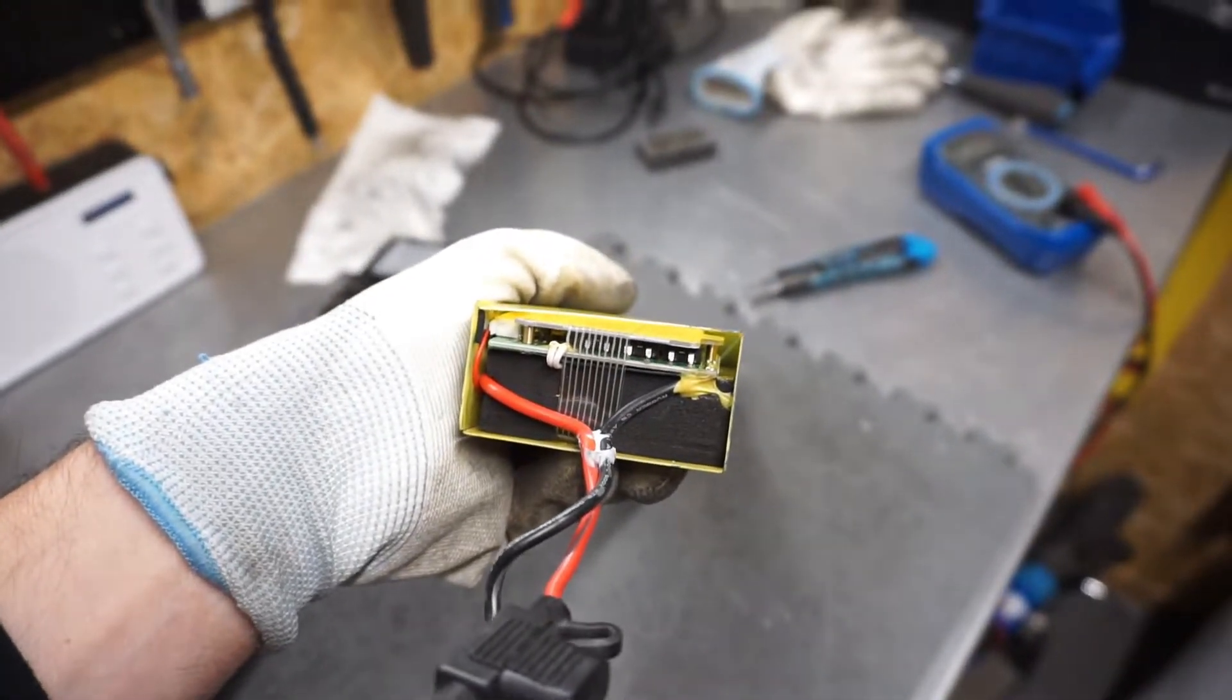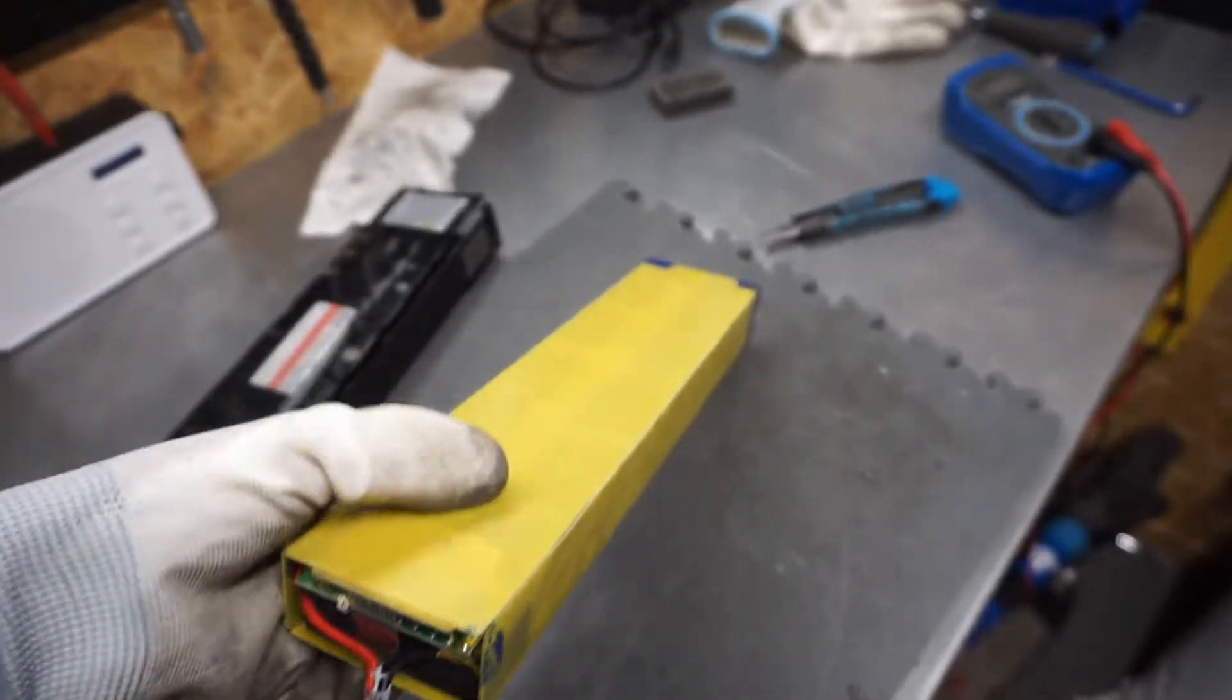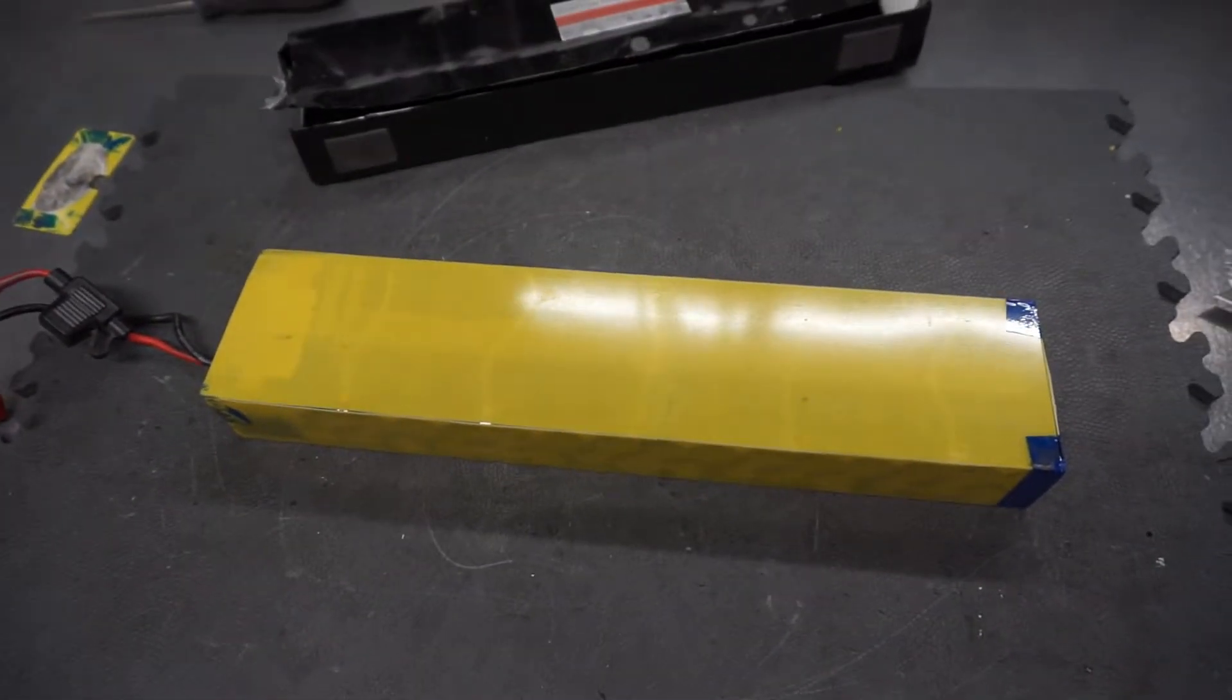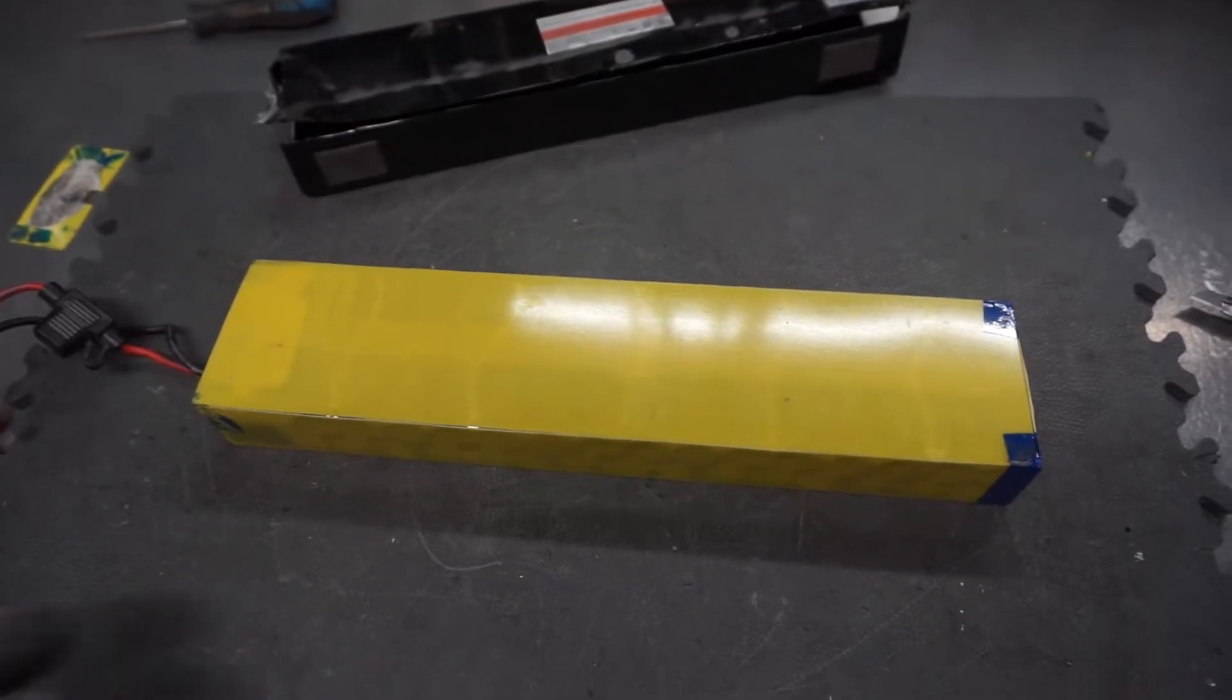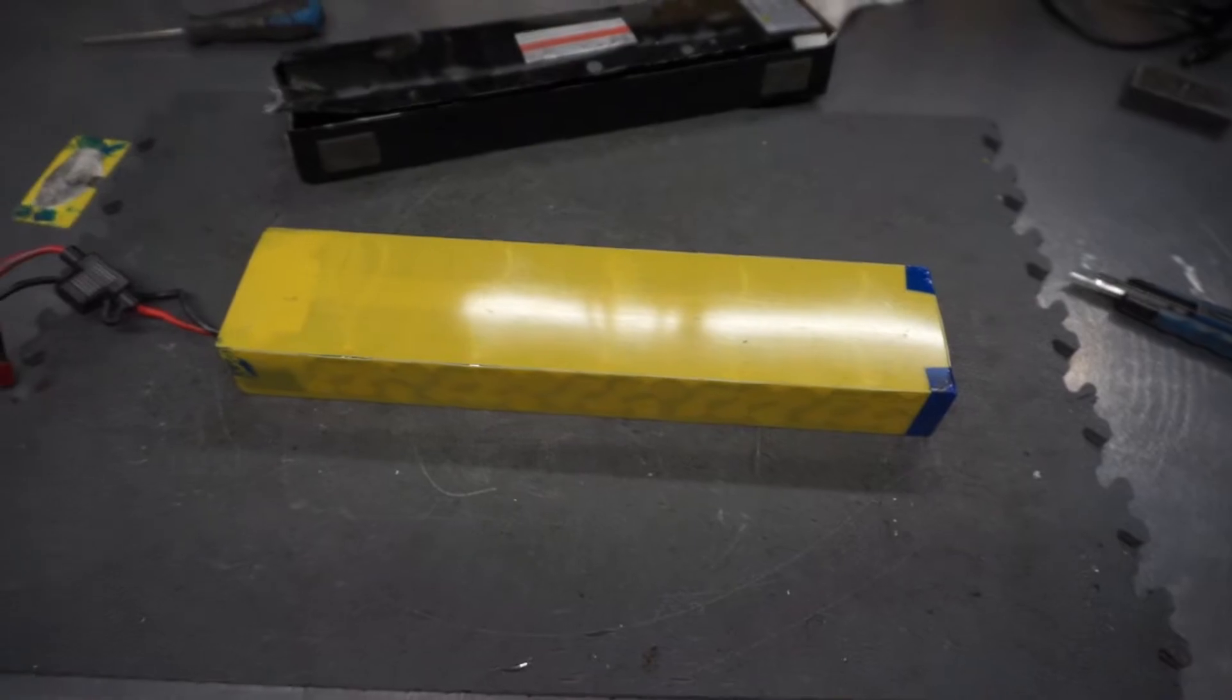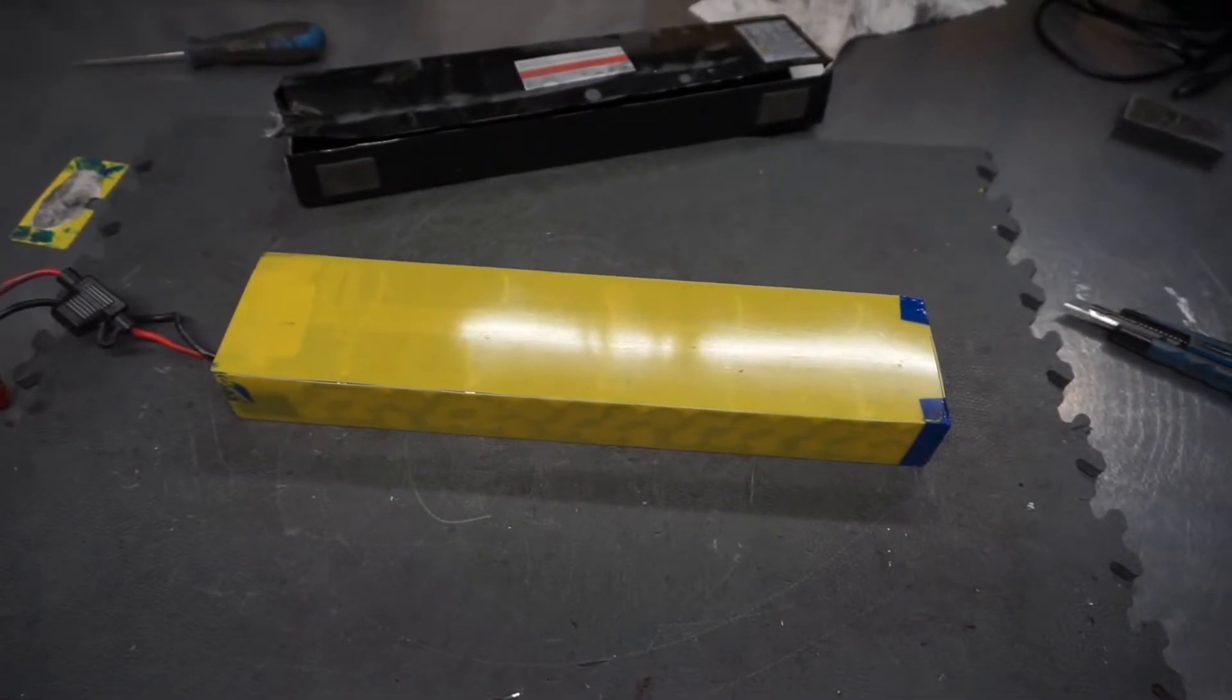Here you can see the BMS. I doubt it's a problem with the BMS. This scooter is working fine. Must be the voltage somewhere in the cells is below others.